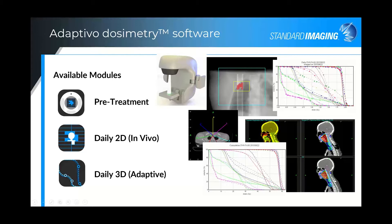A little background about the Adaptivo module: it performs a complete 3D comparison, beginning with a daily cone beam CT which is registered to the planning CT, creating a merged CT image. The planning CT fills in areas where the CBCT may not cover. Deformable registration is used to generate contours on this daily CT. Dose is calculated on the daily CT and accumulated on the planning CT. The entire process is automated and requires little intervention by the user.